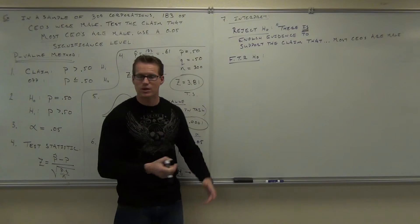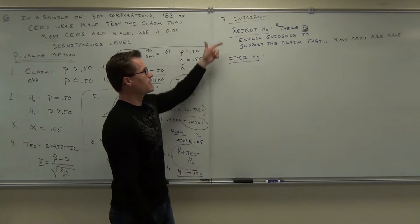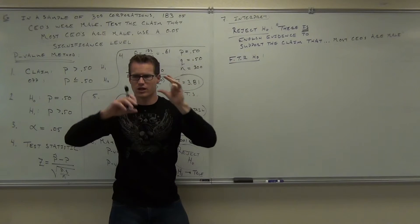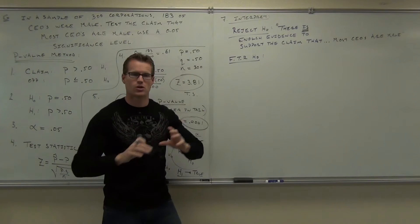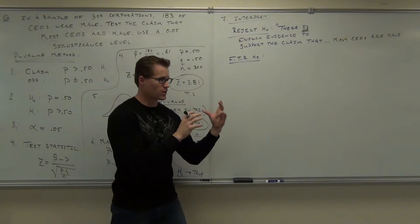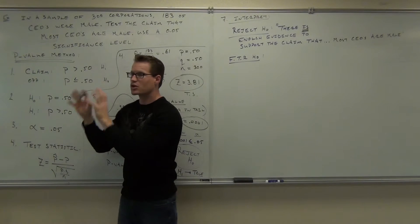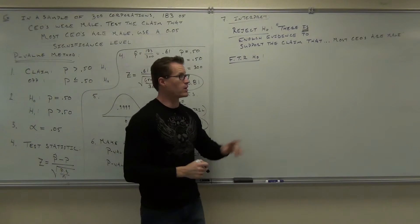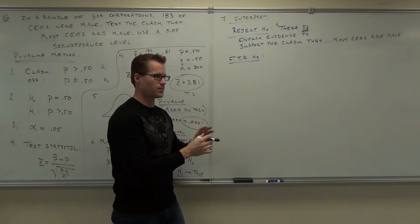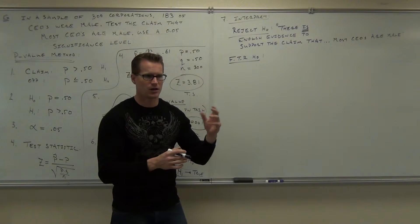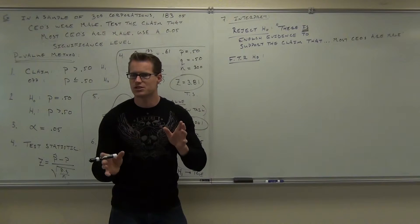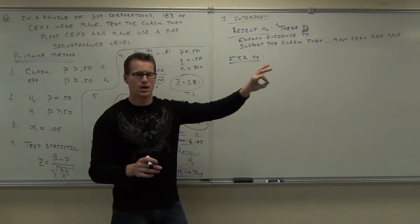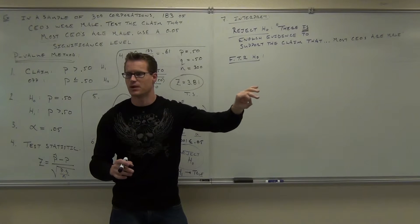There's a writing component — you've got to write stuff out and understand it. If you reject H sub 0, there is enough evidence — that means your sample was rare enough to say your null hypothesis was wrong, which means your alternative hypothesis is right. If the alternative hypothesis is stated with your claim, your claim is right. If you fail to reject H sub 0, there is not enough evidence to support the claim. Those are the only two cases: reject — there's enough evidence to support your claim; fail to reject — there is not enough evidence to support the claim. Then you research it.